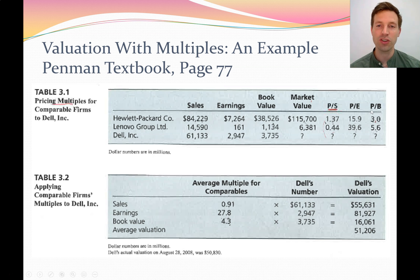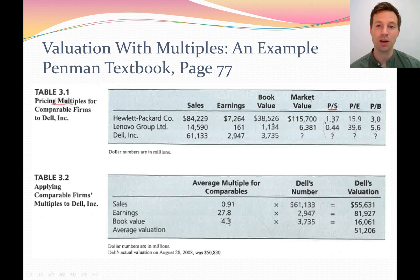The price to book ratio, also called the market to book ratio, takes the market value of equity and divides it by the book value of equity — which is the equity on your balance sheet. So it's comparing what investors value the company at versus what the balance sheet records for equity. We have these three ratios calculated for Hewlett Packard, Lenovo, and Dell.